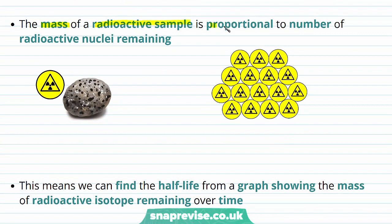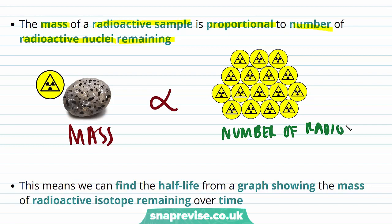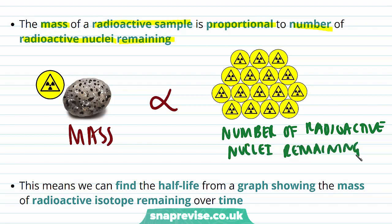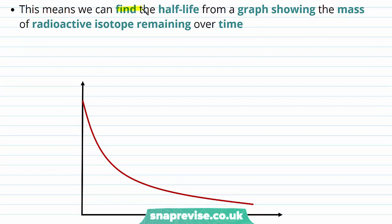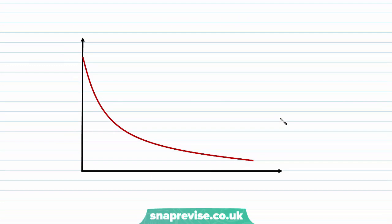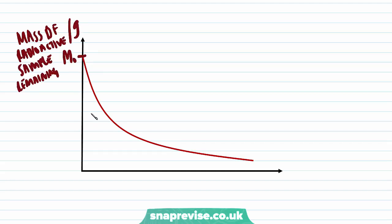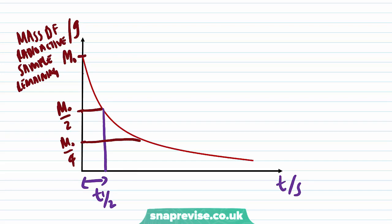The mass of a radioactive sample is proportional to the number of radioactive nuclei remaining, because once a radioactive nucleus has decayed and become stable it is no longer part of the radioactive sample. This means that we can find the half-life from a graph showing the mass of a radioactive isotope remaining over time. We plot the mass of the radioactive sample remaining in grams, with an initial value of m₀, and find the time taken for m₀ to halve.